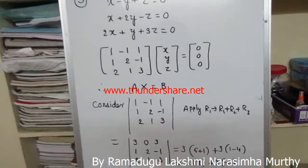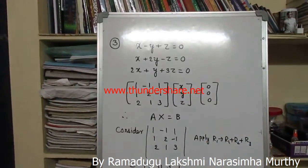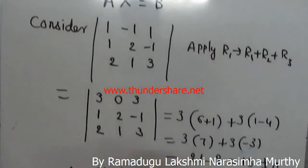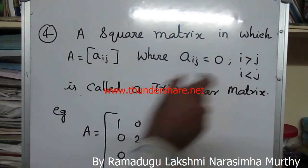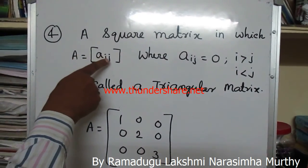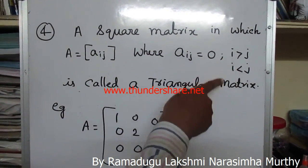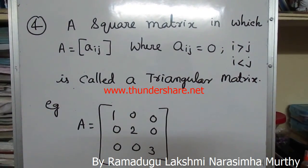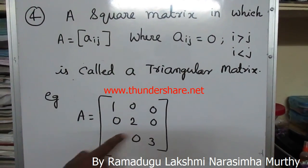Define triangular matrix: a square matrix A = [a_ij] where a_ij = 0 for i > j or i < j is called a triangular matrix. For example, A = diag(1, 2, 3), i.e., [1,0,0; 0,2,0; 0,0,3].